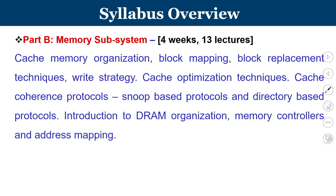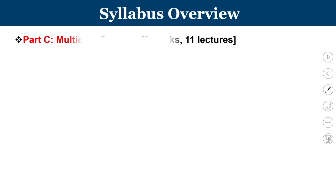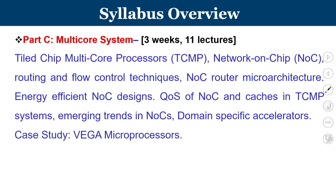Having covered the processor and memory sides, the third portion introduces multicore systems, covering roughly three weeks on tiled chip multicore processors. We will learn about network on chip, routing and flow control techniques, the micro-architecture of network on chip routers, energy-efficient NOC design for handheld devices, and how network on chip and caches together provide quality of service in tiled chip multicore processors, along with emerging trends in NOC and domain-specific accelerators for artificial intelligence applications.